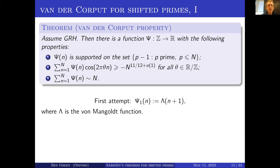So how are we going to construct this ψ? What's the most naive thing you can try? You could just take the function that's 1 on the shifted primes and 0 everywhere else. But if you have any experience in analytic number theory, you're tempted to weight the primes with a logarithmic term so their average value is one — that is, to use the von Mangoldt function.